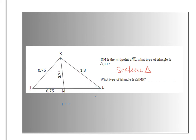What type of triangle is triangle JMK? JMK is the red triangle. Notice the sides are 0.75, 0.75, and 0.75 — they're all the same. So that is an equilateral triangle.